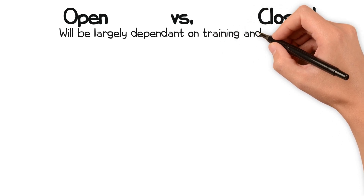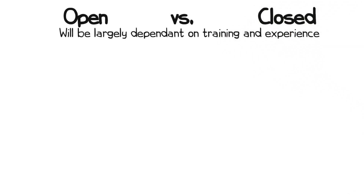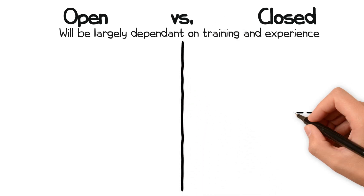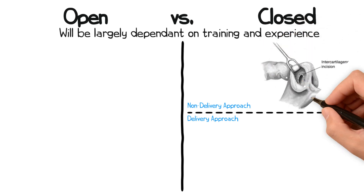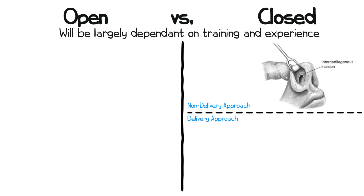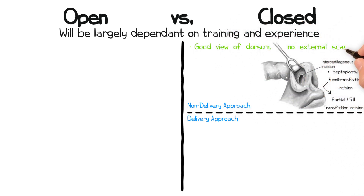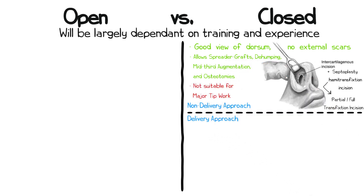What factors determine the decision between an open versus a closed septorhinoplasty? This is ultimately a personal decision depending largely on training and experience, but also on what you are trying to achieve. A closed approach is broadly divided into non-delivery and delivery approaches. The non-delivery approach involves an incision at the intercartilaginous area combined with a conventional septoplasty hemitransfixion incision, converted to a full or partial transfixion incision to expose the whole septum and nasal dorsum. It permits good views of the dorsum with no external scars, but for major tip work, a delivery approach is needed.